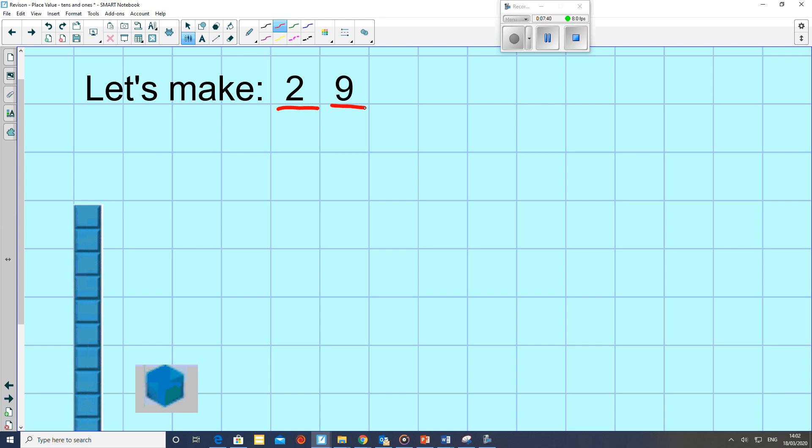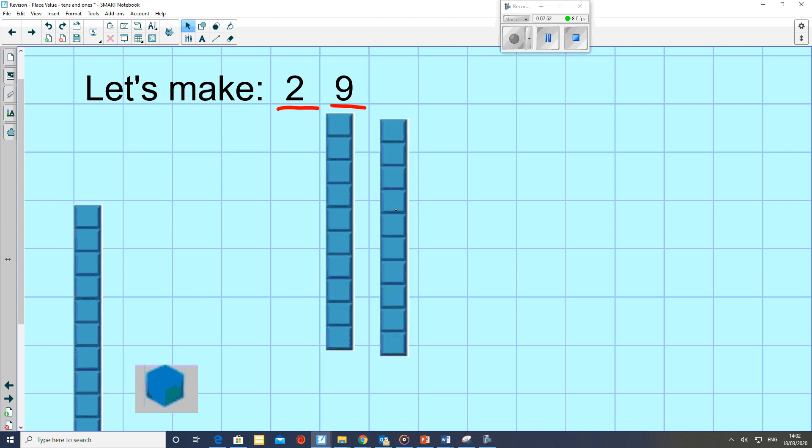So you need to think each time. 29 has 2 tens. So I'm going to take a 10 over here, and a 10 over here. That takes care of the tens part. So now I need to make the ones. And I need 9 ones.